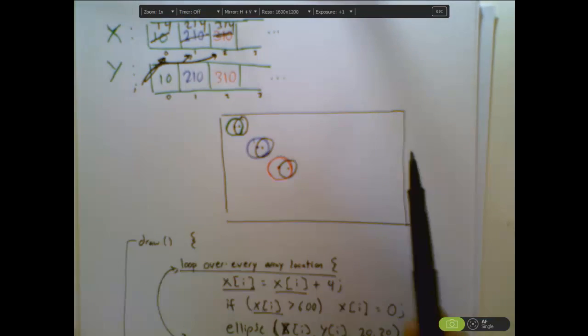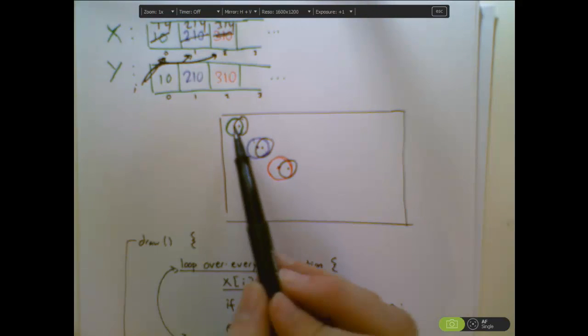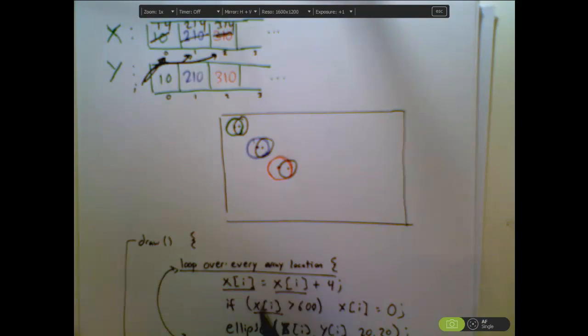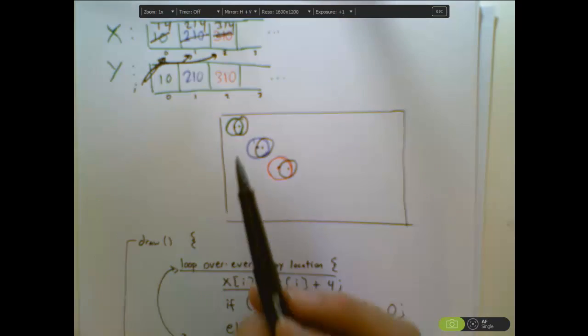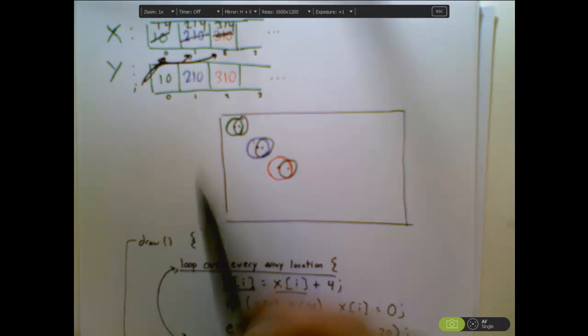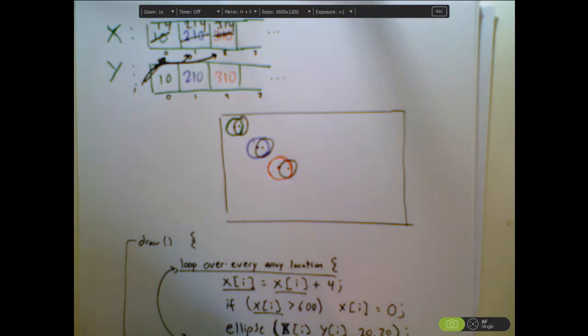I do that for every single coordinate in the array and that's going to do the exact same three steps of moving it, checking it, drawing it for every single pair of coordinates. And that's going to make every single ball object move independently. And I'm doing that every single frame of the animation that happens.